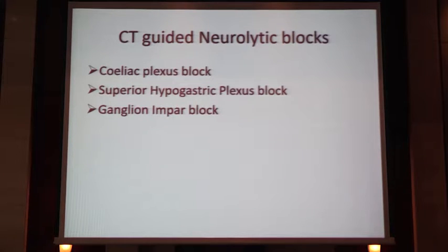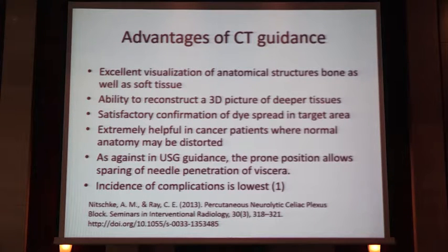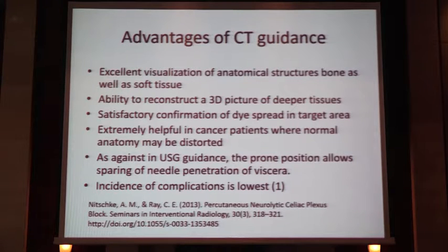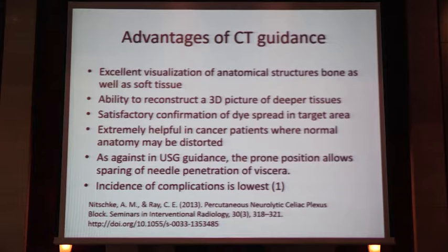These are the major indications for doing percutaneous CT-guided blocks. The blocks we commonly do are the celiac, superior hypogastric, and ganglion impar block. CT gives excellent visualization of structures as compared to fluoroscopy, where you can see only the bony part. It gives you the ability to reconstruct a three-dimensional picture of deeper tissues, so you can adjust the angle in three dimensions — it's not a unidirectional entry when putting the needle into deeper abdominal tissues, especially from prone position. As against USG guidance, the prone position allows sparing of needle penetration of the viscera. The incidence of complications has been the lowest, as a paper by Nietzsche and colleagues has shown, and in our clinical practice we also endorse that.